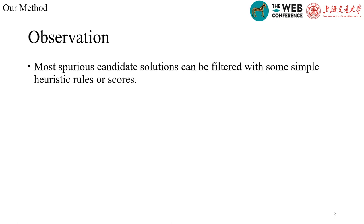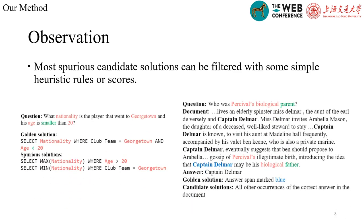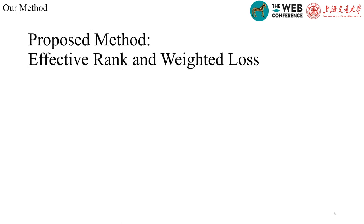In order to overcome this challenge and come up with a better method, we first have the following observations. We find most spurious candidate solutions can be filtered with some simple heuristic rules. In the semantic parsing tasks, the correct SQL query covers more information in the question than the spurious ones, with exact matched tokens or semantically consistent operators. In machine reading comprehension tasks, the sentence which contains the correct answer span also has higher semantic similarity with the question than the spurious ones. Based on these observations, we propose a new method: effective rank and weighted loss.